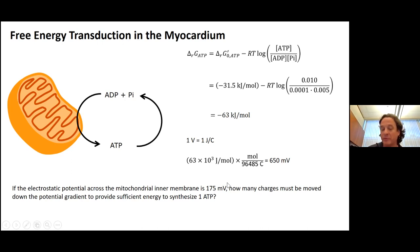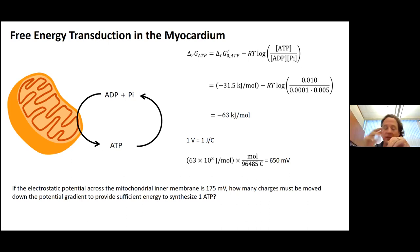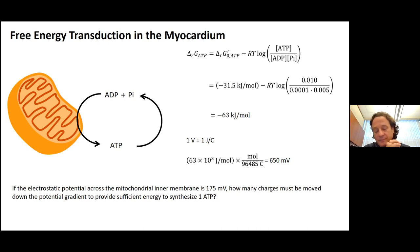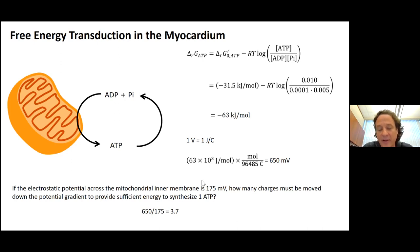These are hydrogen ions moving across down the 175 millivolt gradient — positive outside, negative inside the matrix — and we're synthesizing ATP at a hydrolysis potential of 650 millivolts. The driving force is 175 millivolts. The calculation is simply 650 divided by 175, which gives 3.7. So 3.7 charges need to be moved to synthesize one ATP.